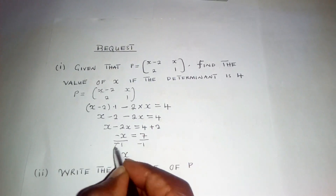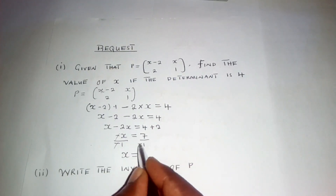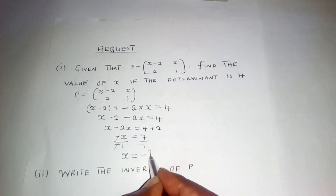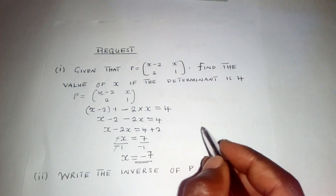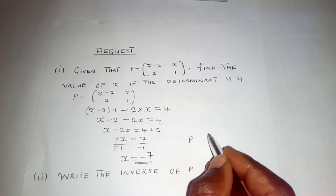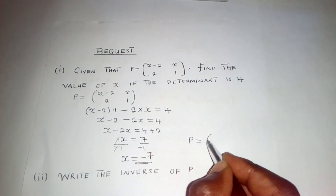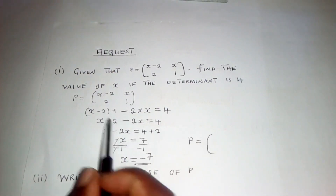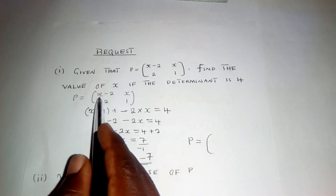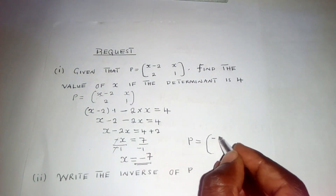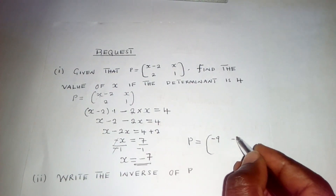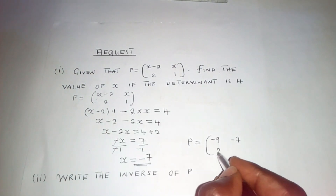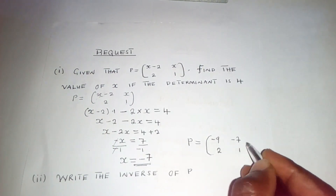This negative and negative will cancel, so when we divide here we have negative 7. So x is equal to negative 7, whereby in the original matrix P, where there is x we put negative 7. So it will be negative 7 minus 2, which is equal to negative 9. And x will be equal to negative 7 here. Here we have 2 and 1.